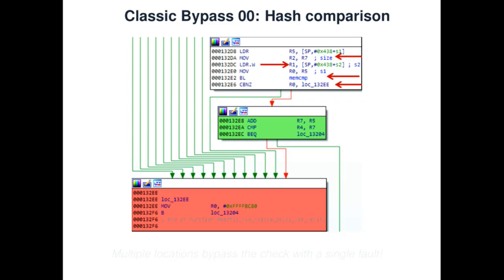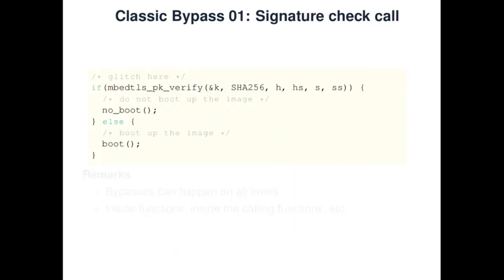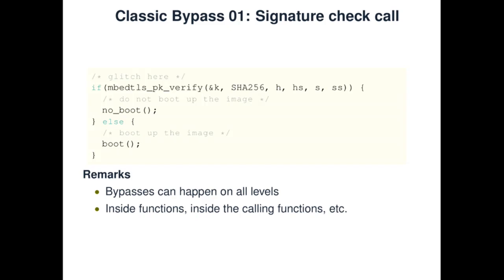If we take a step back and look at the code calling that function — in this case mbedTLS_pk_verify — we can also think of the types of faults needed to inject there. If mbedTLS_pk_verify fails, we don't boot, otherwise we boot, and we can insert the same kinds of faults. The point is that bypasses can happen on all levels — inside functions, inside their calling functions, and inside their calling functions.